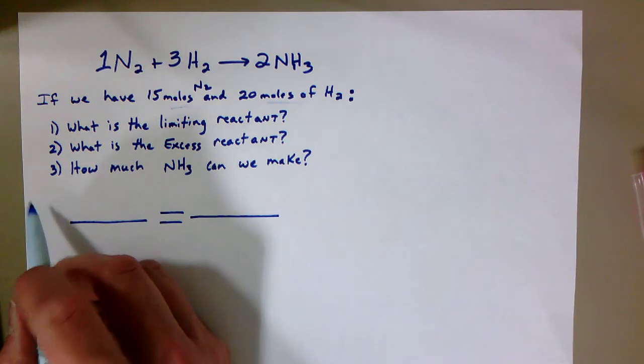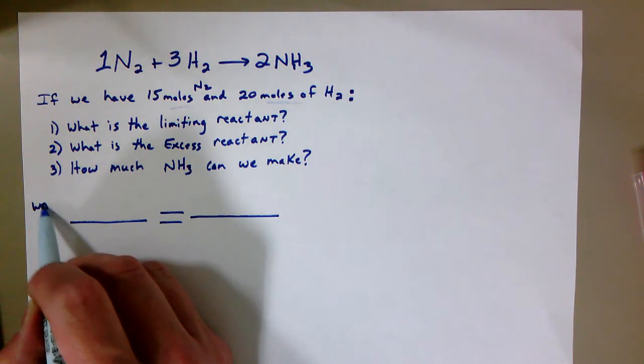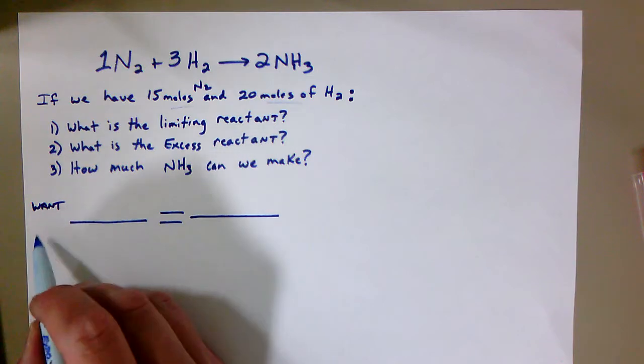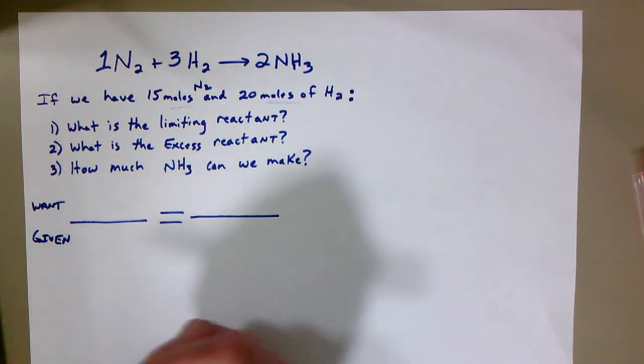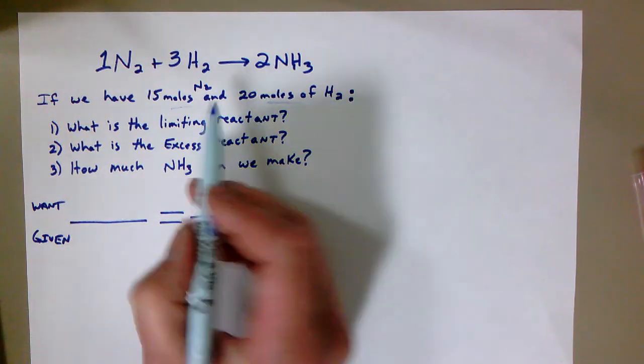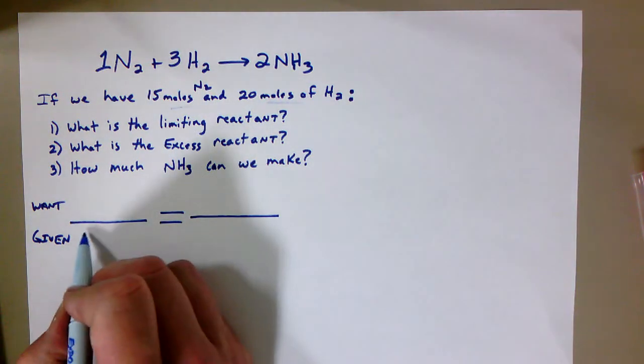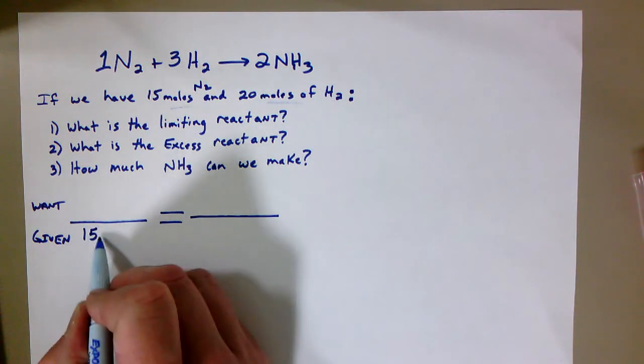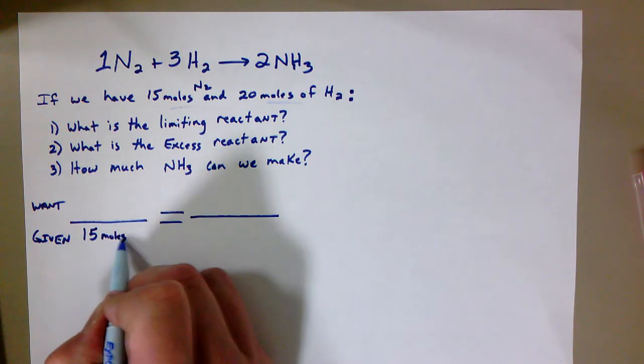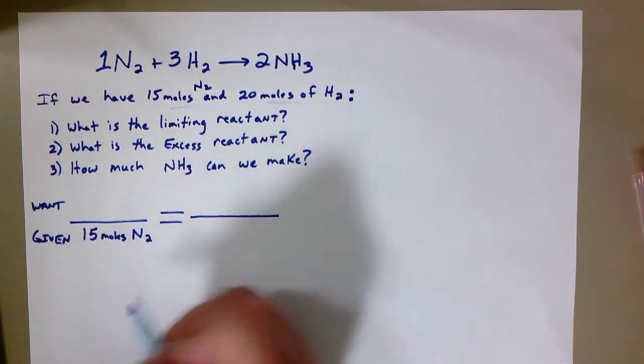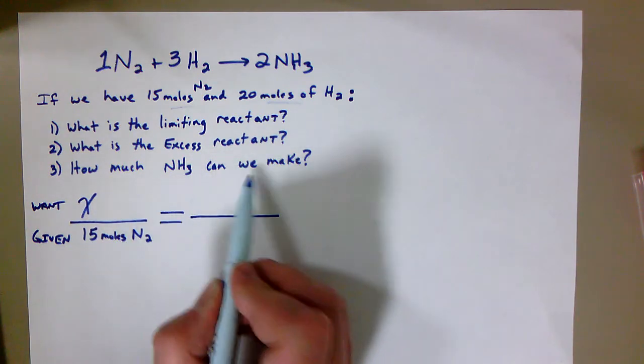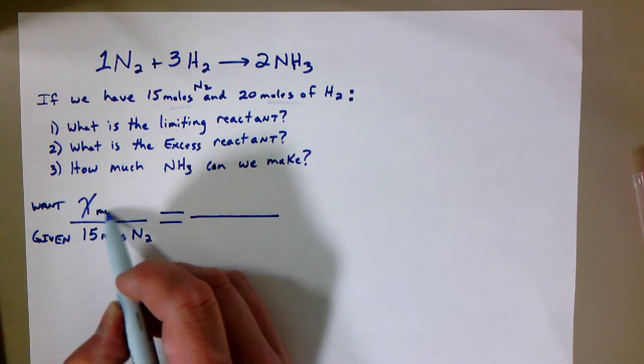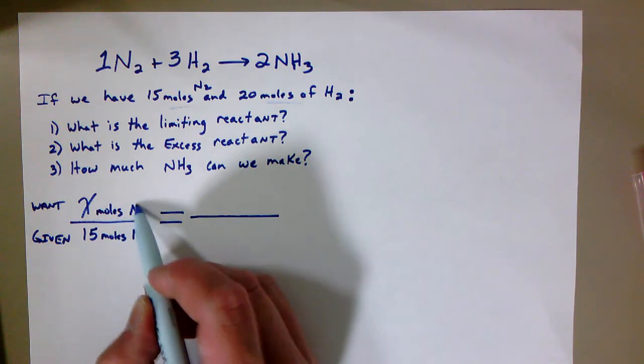So we do two of these, right? So again, remember, what does the question want us to find? We want to put that on top. What does the question give us? That goes on the bottom. And on this, I'm just going to go in order here. So the question has given me the fact that I have 15 moles of N2, and the question is tasking me with finding how much NH3 can we make. So that's going to be what I'm trying to find. In this case, it's going to be moles of NH3.